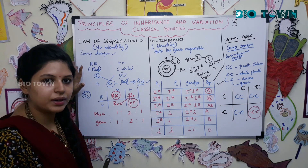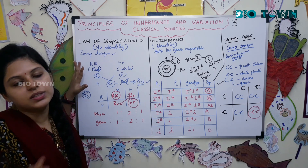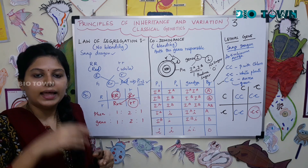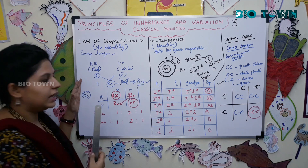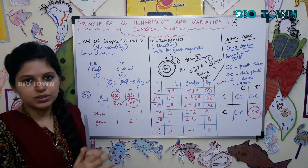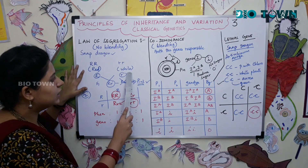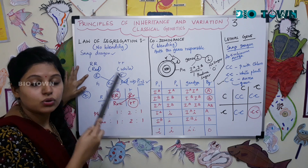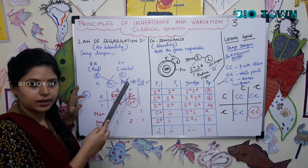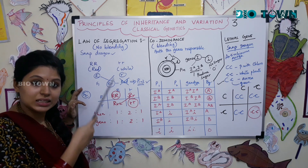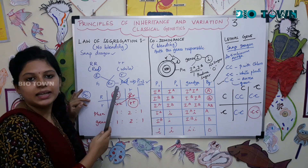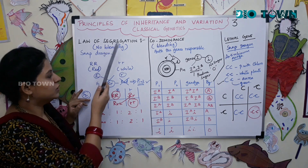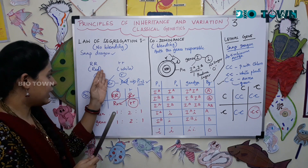I'm taking the example of snapdragon flowers. There is also an example of the four o'clock plant, Mirabilis jalapa, in the state board textbook. Now with red color snapdragon flowers and white color snapdragon flowers — red is the dominant character and white is the recessive character. But in this law of segregation, the dominant character is not exhibited; rather a new character is exhibited. In the F1 generation, neither red nor white is exhibited.